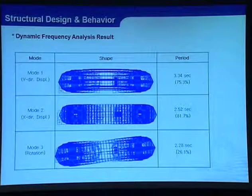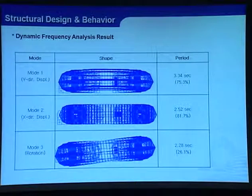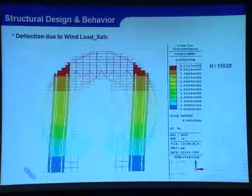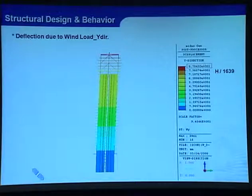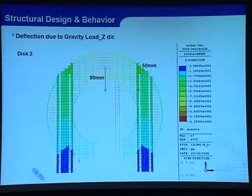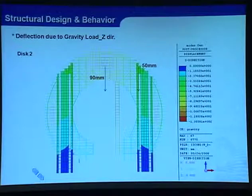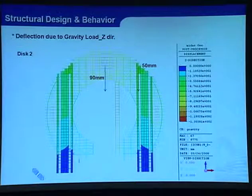Regarding structural behavior, the mode shapes and fundamental period show that the first mode fundamental period is 3.34 seconds. Wind deflection in the strong axis was H over 15,000, meaning the building is very stiff in the lateral direction. For deflection due to gravity load, the vertical deflection at the center part is approximately 90 millimeters, and in the core area it is 50 millimeters — a differential of only 40 millimeters, which confirms that the transfer truss was properly designed.